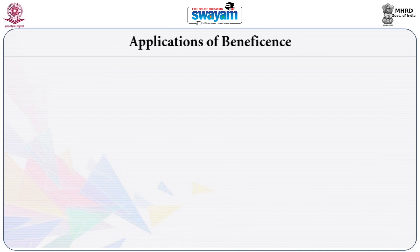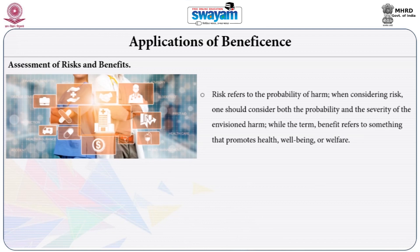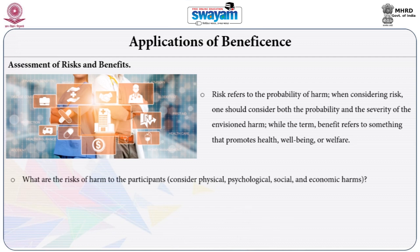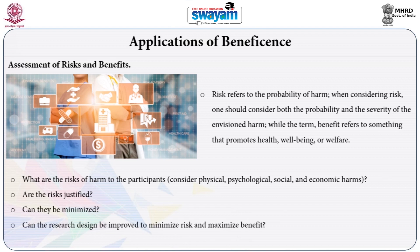Also consider what additional protections can be in place for those with limited autonomy and how to determine whether one lacks the autonomy to make a reasoned decision. The second aspect is application of Beneficence — assessment of risks and benefits is important. Risk refers to the probability of harm; one should consider both the probability and severity of envisioned harm, while benefit refers to something that promotes health, well-being or welfare. What are the risks of harm — physical, psychological, social and economic? Are the risks justified? Can they be minimized? Can the research design be improved to minimize risk and maximize benefit?